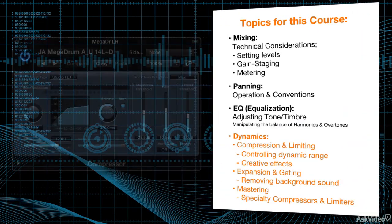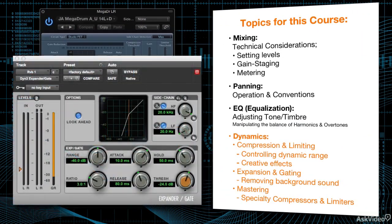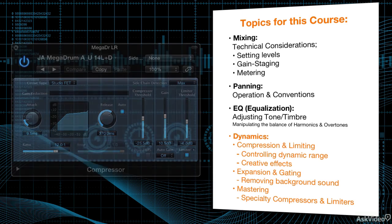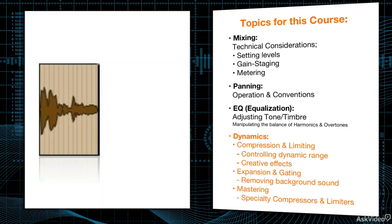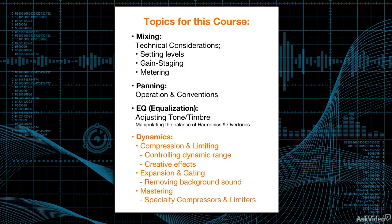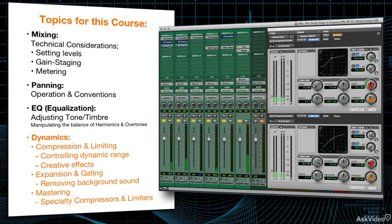Dynamics includes compression and limiting, and expansion and gating. Compression provides automatic level adjustments—also done for both technical and creative reasons. Applied correctively, compression can take a track with constantly varying levels and provide a more consistent overall level, as well as maintain the proper balance against other tracks in a mix. It's also used for creative applications, like deliberately altering the envelopes of notes—an effect that can enhance the punch or thickness of instruments, like drums, for example.